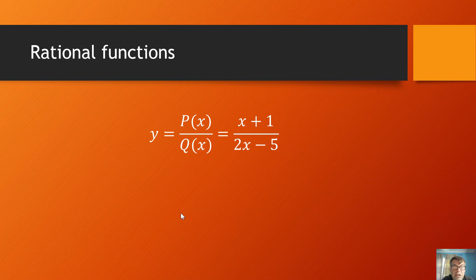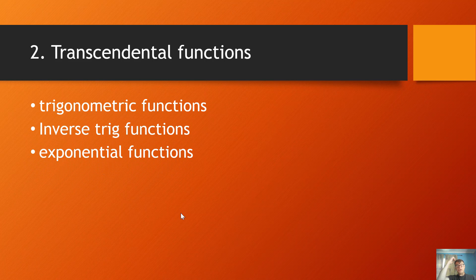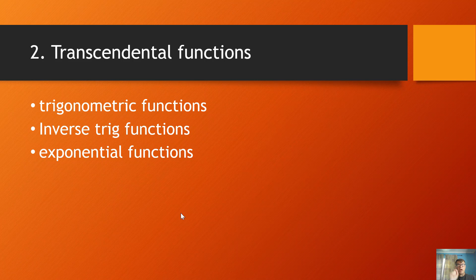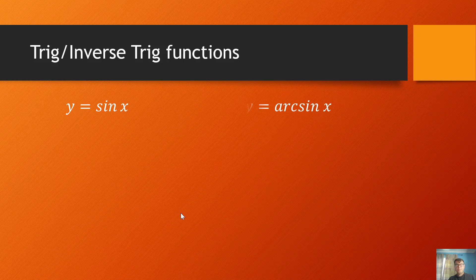Rational functions are a function divided by a function. And there, with that, you have the basic algebraic functions. So transcendental functions include the trig functions, inverse trig functions, exponential functions. So we talked about power functions are where x is raised to a power. Exponential functions are where a number is raised to the x. So the variable is in the exponent rather than in the base. So power functions, the variable is the base raised to a power. Exponential functions, a constant is raised to a variable.